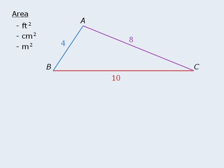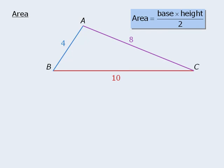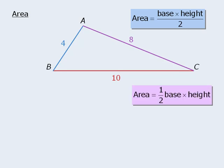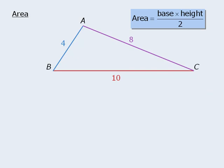Please note that on the GRE, the square units are sometimes implied. So for example, a question might state that a certain rectangle has area 10, which we can assume to mean 10 square units of some kind. Now to find the area of a triangle, we must multiply the triangle's base by its height, and then divide by 2. Another way to write this is: the area is equal to one half times the base times the height. Both formulas will yield the same values, but I'm going to use this one for the lesson. Please note that the height of a triangle can also be referred to as the altitude of a triangle, so both terms can be used interchangeably.